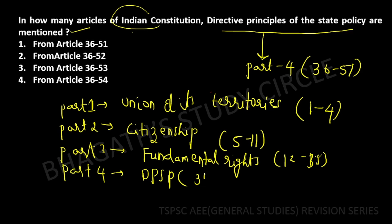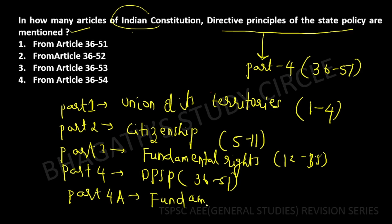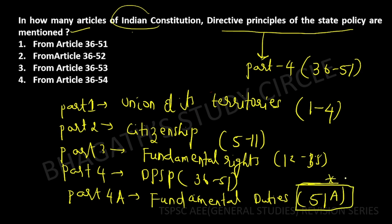Part V covers the Union. Part IVA covers Fundamental Duties — Article 51A. So the DPSP spans from Article 36 to 51, which is 16 articles in Part IV. Let's move to the next question.